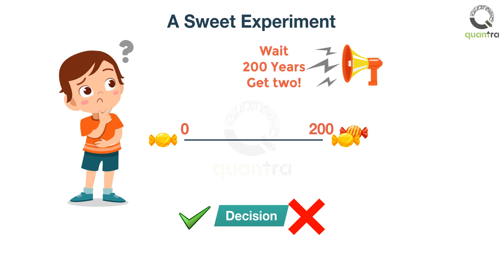Technically, this means that we may discount our current reward in order to maximize it in the future.